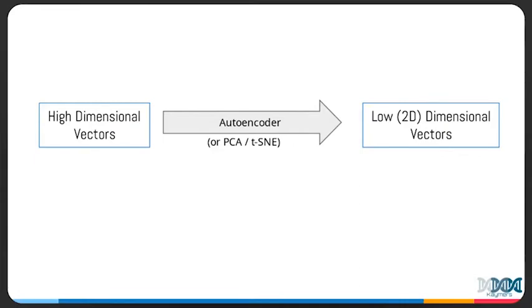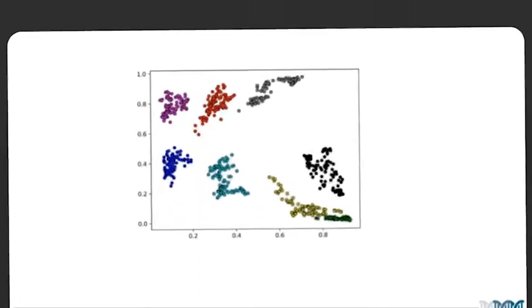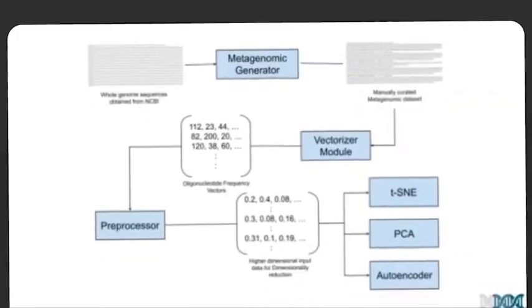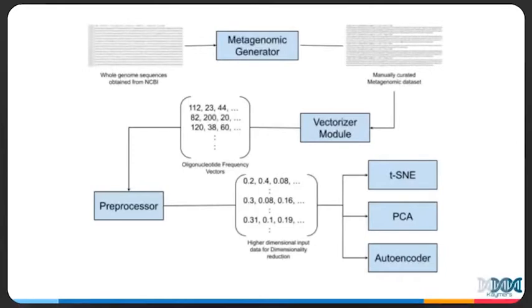Then we use an autoencoder to lower the dimensionality of these vectors to two dimensions. We also use PCA and t-SNE to evaluate how well the autoencoder performs at dimension reduction. Then we visualize these 2D vectors using a scatter plot like this. This is an overview of the process.